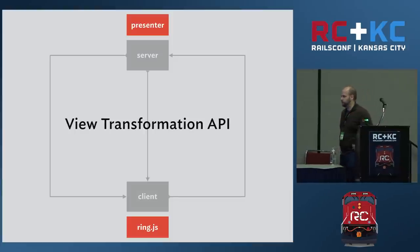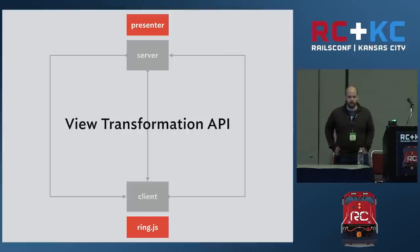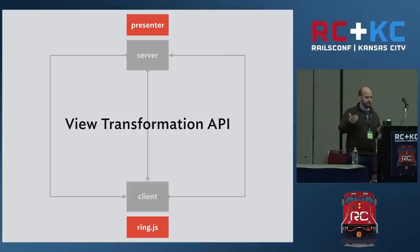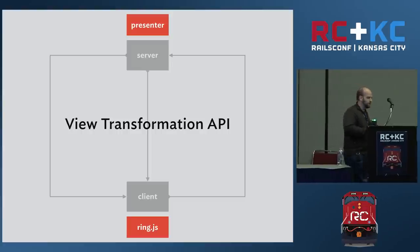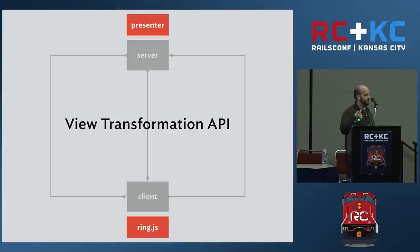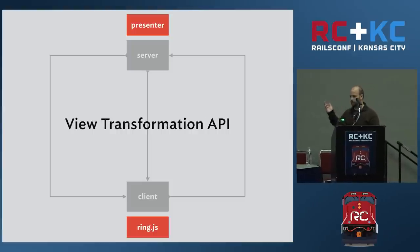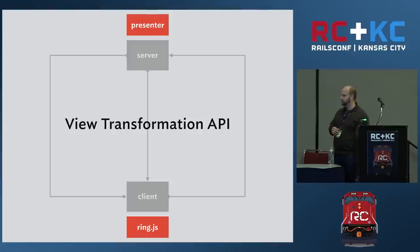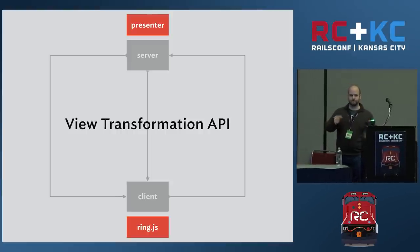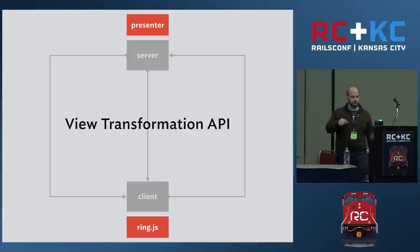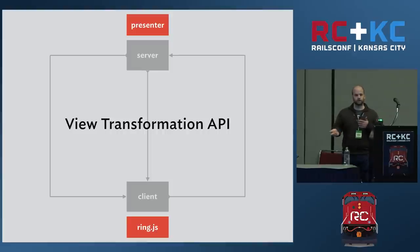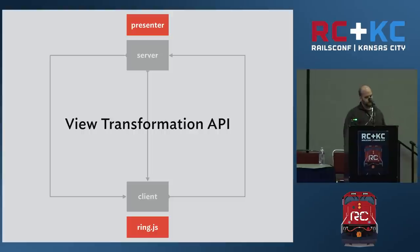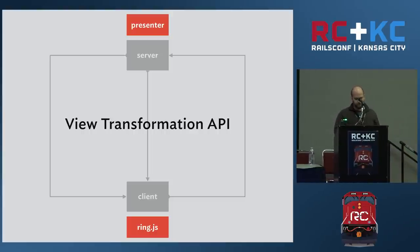This happens through something called the view transformation API. Because we've separated our view structure and our rendering logic, we're left with about seven methods for how we express our view rendering in Ruby code. We implement that on the back end in a class called Presenter, which is responsible for doing the initial HTML rendering. But ring.js also has a client-side implementation of the same API. When it receives the UI transformations, expressed in this common API, ring can just iterate over them, call the right functions on the client-side, and make the browser reflect the new state.